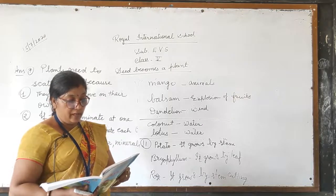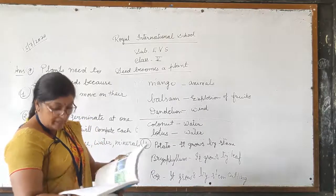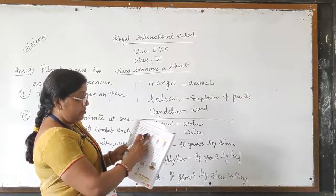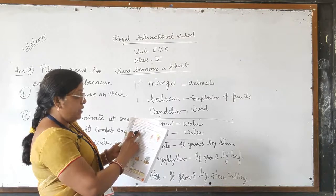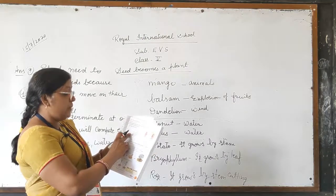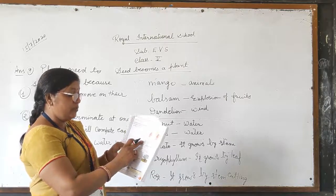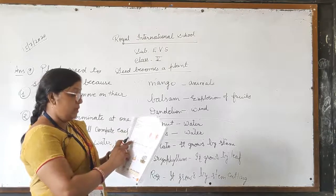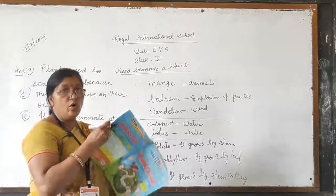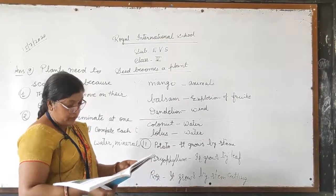Question number 13: how will you obtain new plants from a sweet potato? The answer is on page number 59. Take a sweet potato and insert toothpicks in it on four sides. Take a glass filled with water and place the sweet potato on the mouth of the glass so that the lower part remains immersed in water. Put this glass where it gets fresh air and sunlight. After a few days, roots come out and small plants grow. You also have to draw this diagram in your notebook.